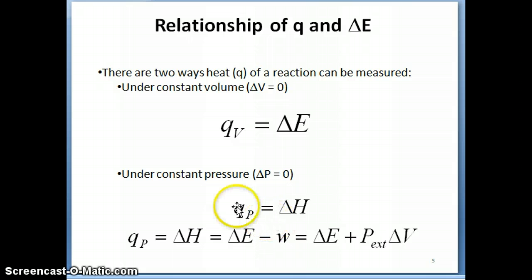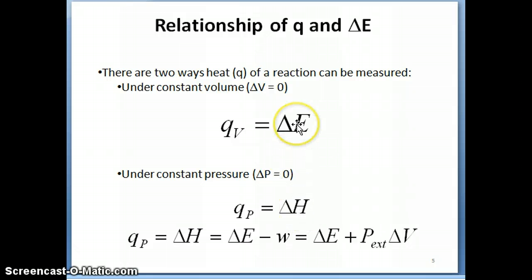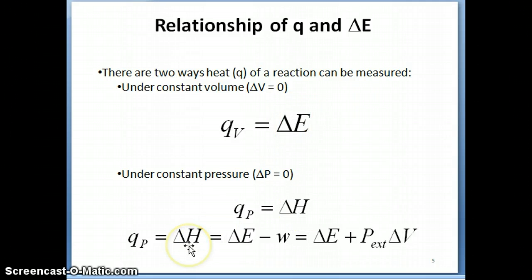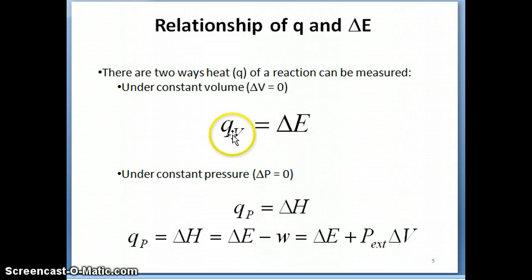What we want to do later on is explain what delta H is and what its relationship is to delta E, because delta E is what we're ultimately looking for. But in this video I just want to go a little bit deeper into the idea of how we can actually calculate Q from either a constant volume measurement or a constant pressure measurement.